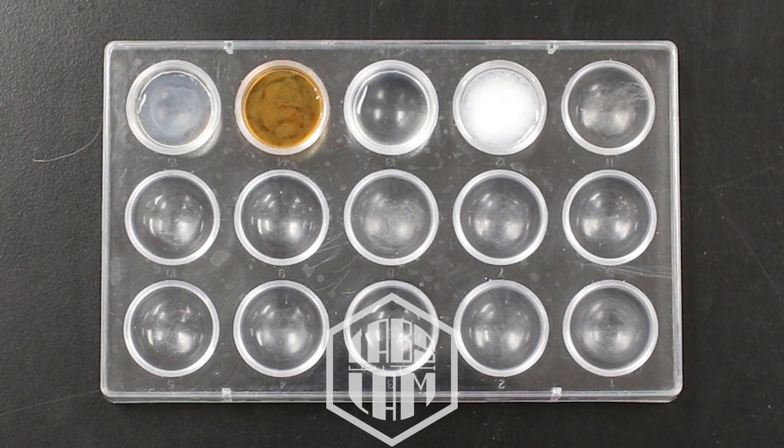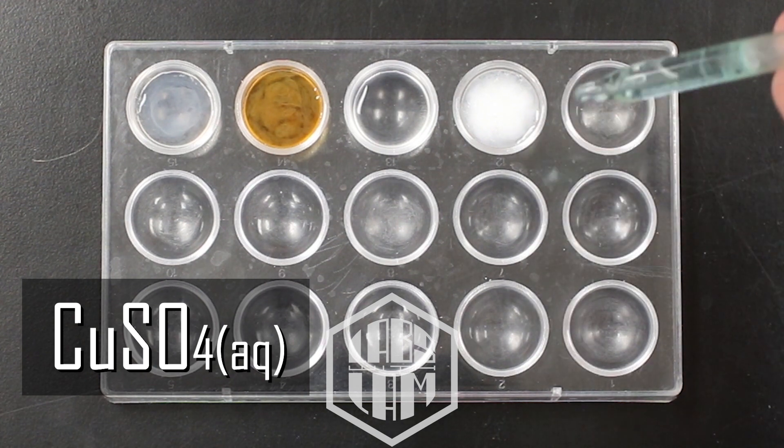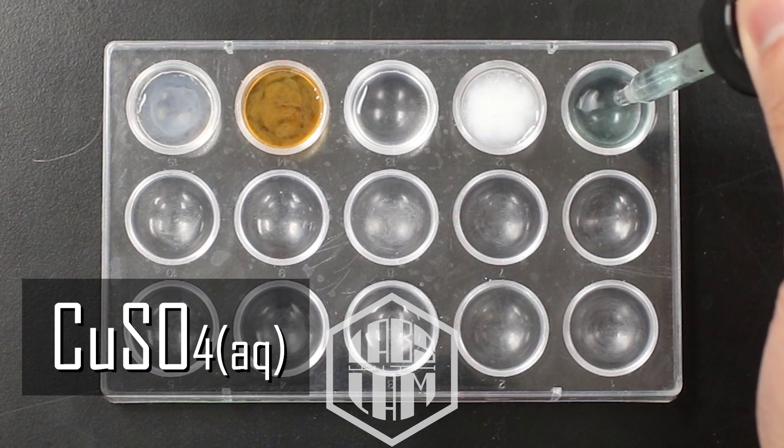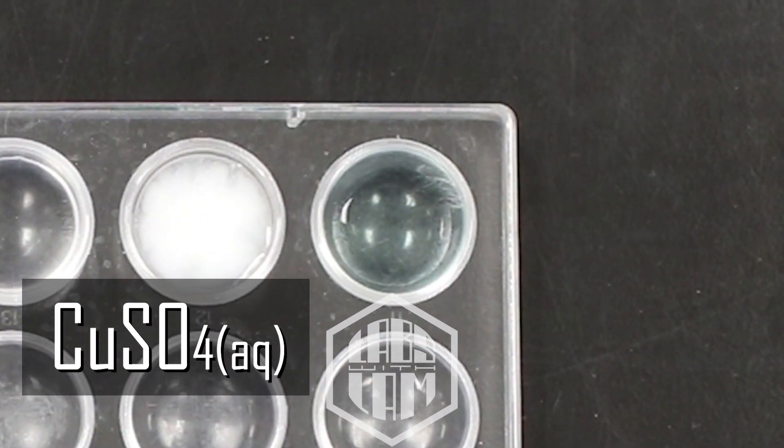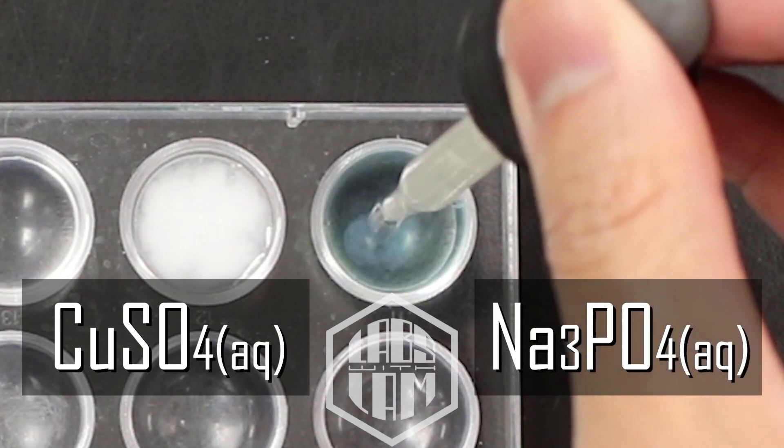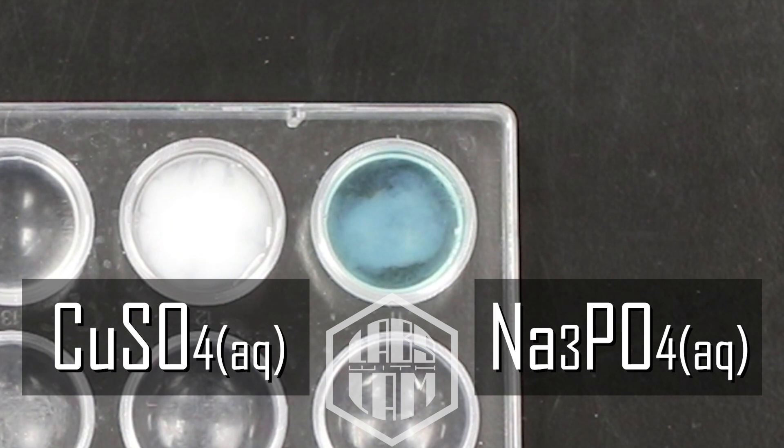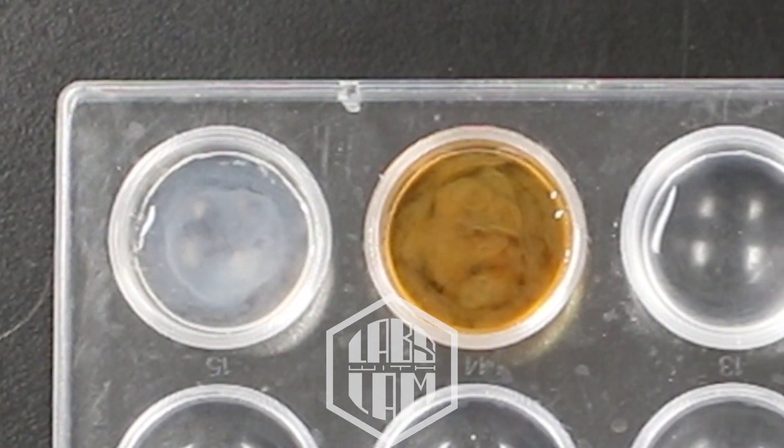And the last mixture for part one, we've got copper sulfate, which we can see is already blue. And to that, we're going to add some sodium phosphate. And I'll give you one last close-up of each of the mixtures.